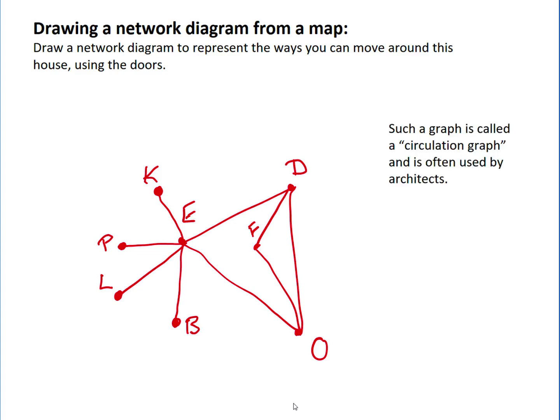These are actually used by architects when they're designing houses or other buildings, and it's called a circulation graph because it shows how people can circulate around that particular building.